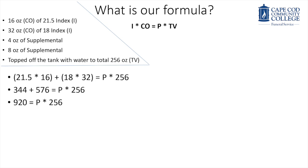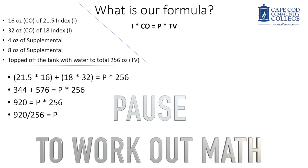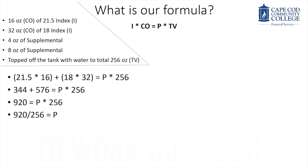Now how are we going to figure out what P equals at this point? You're going to want to divide 256 from both sides of the equation in order to remove it from the right side and to figure out on the left side what P equals. Pause this video again so that you can work out what 920 divided by 256 equals.